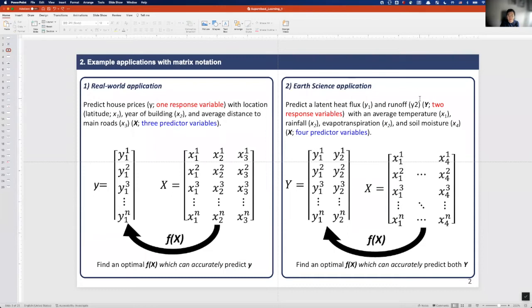Secondly, in earth science research areas, we can predict latent heat fluxes and runoff together with relevant environmental variables. Here we have n samples of two response variables, and we have four predictors which include average temperature, rainfall, evapotranspiration, and soil moisture.